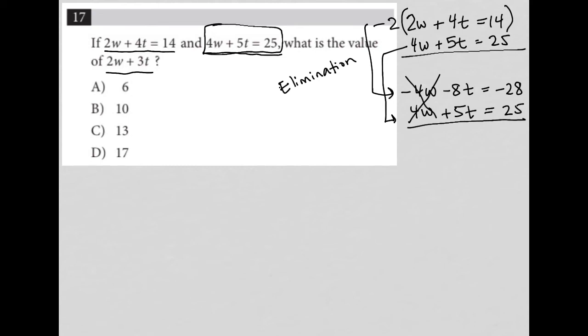negative 8t plus 5t is negative 3t. And negative 28 plus 25 is actually equal to negative 3, which then tells me that t is equal to positive 1. So I know t is 1.